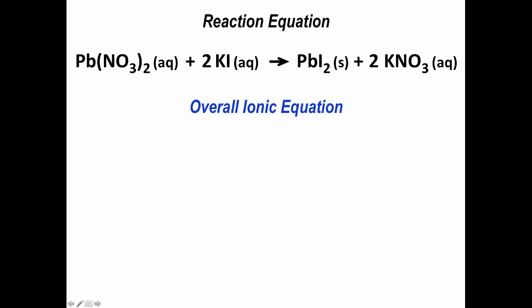But what we sometimes do is we note that lead nitrate, lead(II) nitrate, is an aqueous solution. Which means even though we're writing the lead and the nitrate as if we're writing them together, they're really not together in solution. The lead ions and the nitrate ions are actually floating around separate from each other. And the same thing applies to the potassium iodide. It's really not KI stuck together. It's really K plus and I minus floating around in solution.